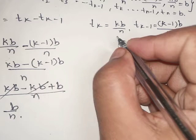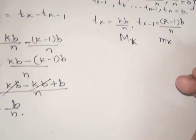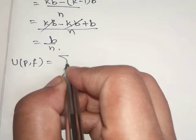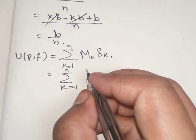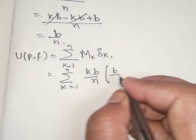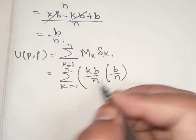Now, the supremum Mk (capital M_k) and the infimum mk (small m_k) are identified. Going to the formula: U(P, f) = summation k=1 to n of Mk·Δk, where capital Mk = kb/n and Δk = b/n.